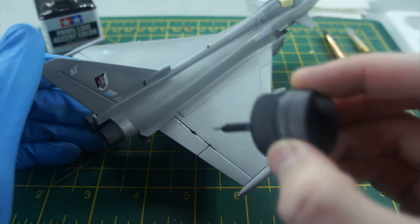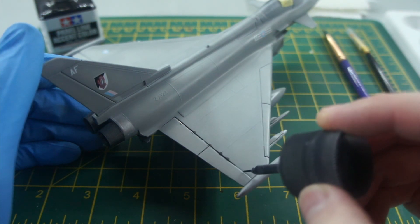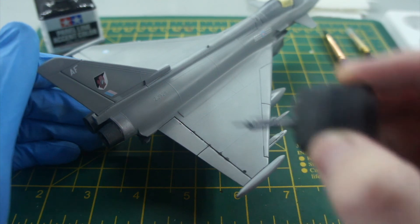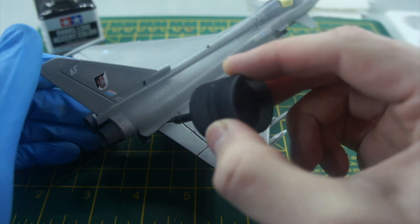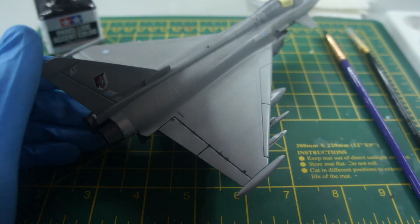Then came the panel lines. Again, you can see how the panel line accent color runs. Gave it a good stir, applied it over the clear coat and it ran beautifully. I applied this all over the aircraft, however I'm only showing you the rear wing because it's the same all over.